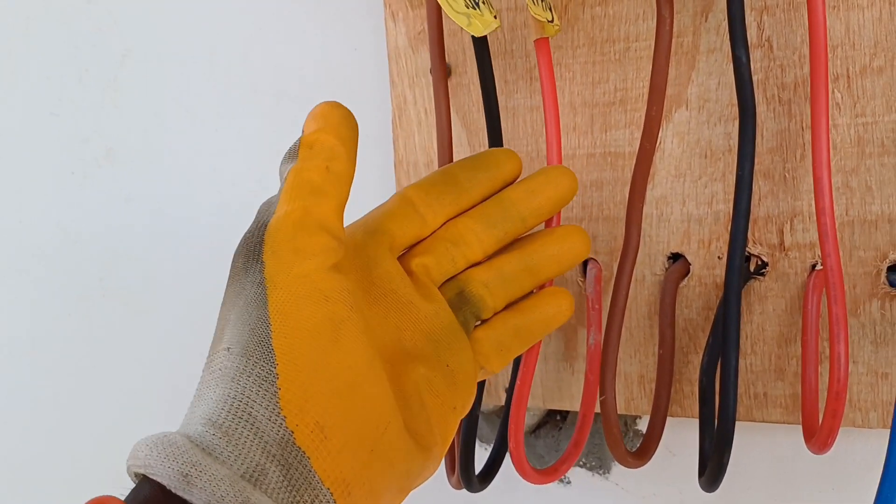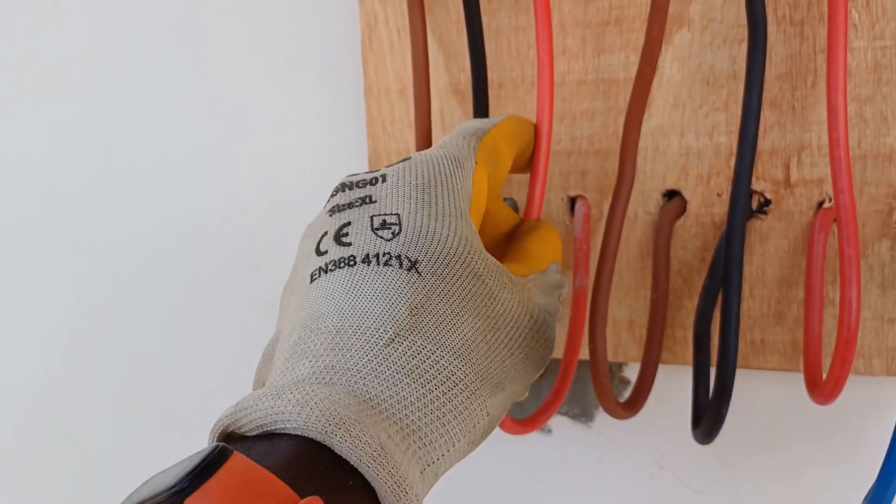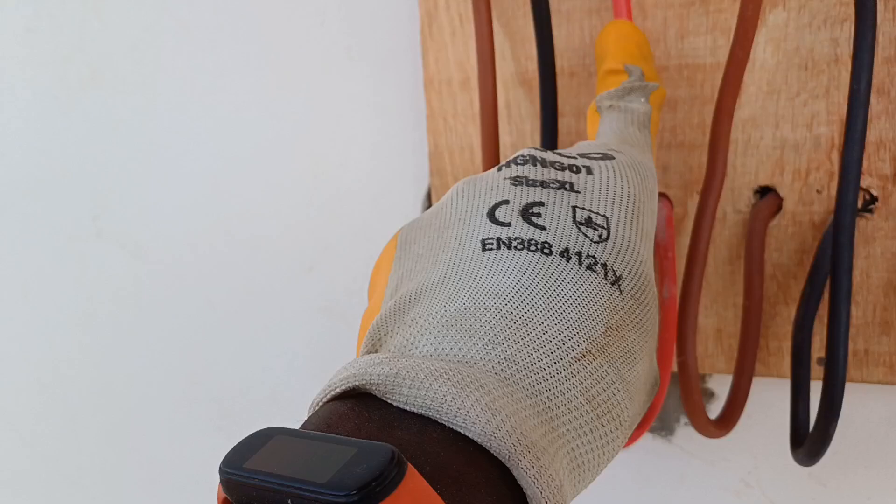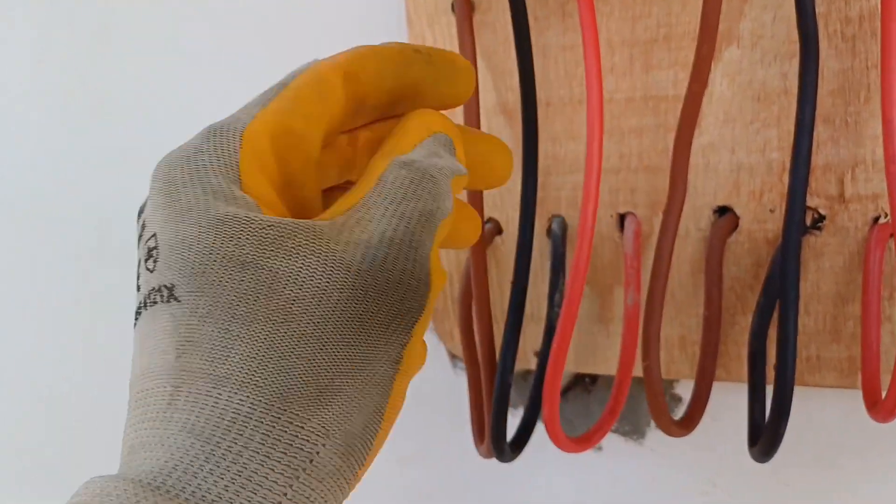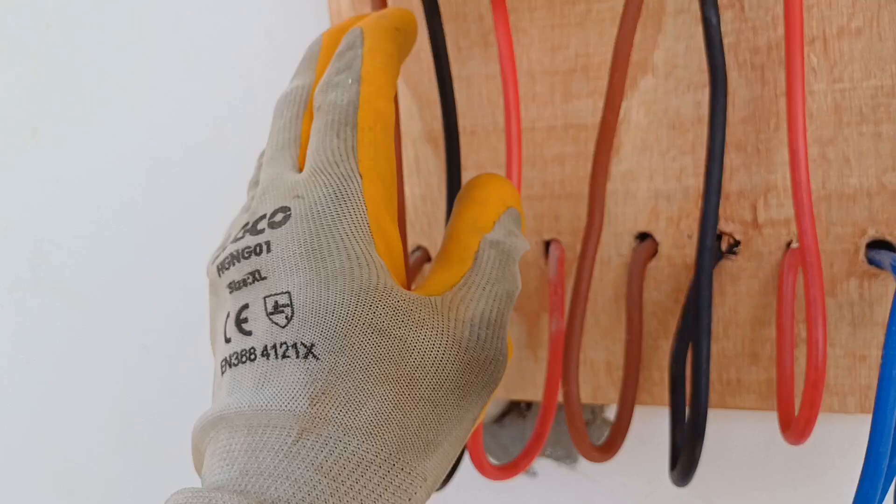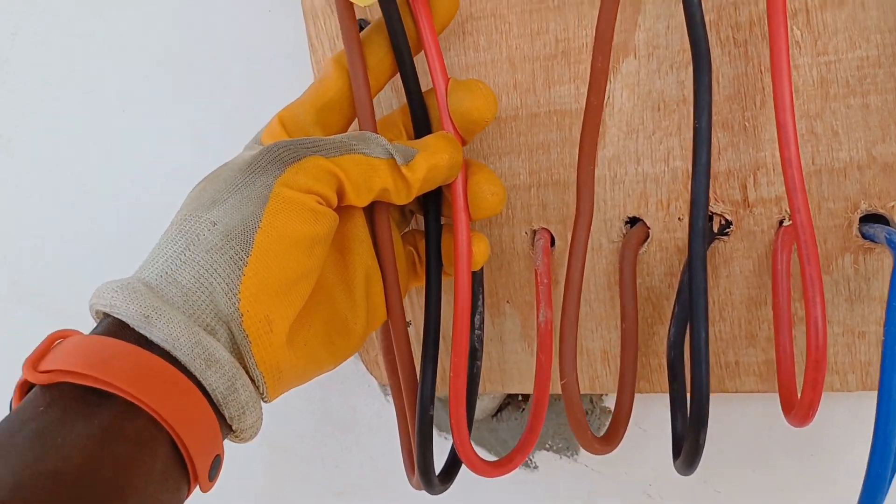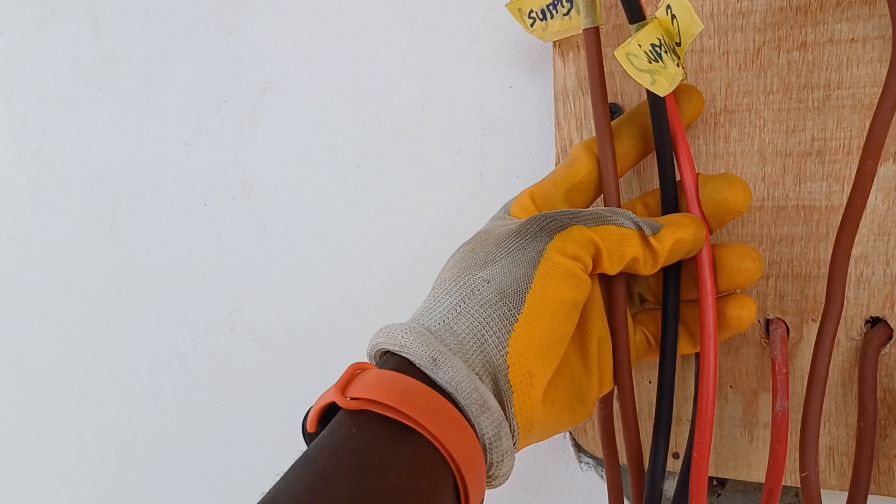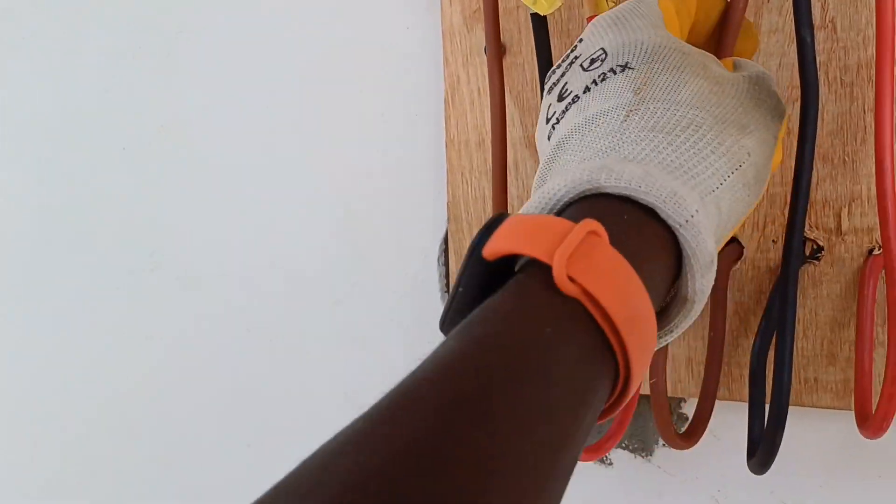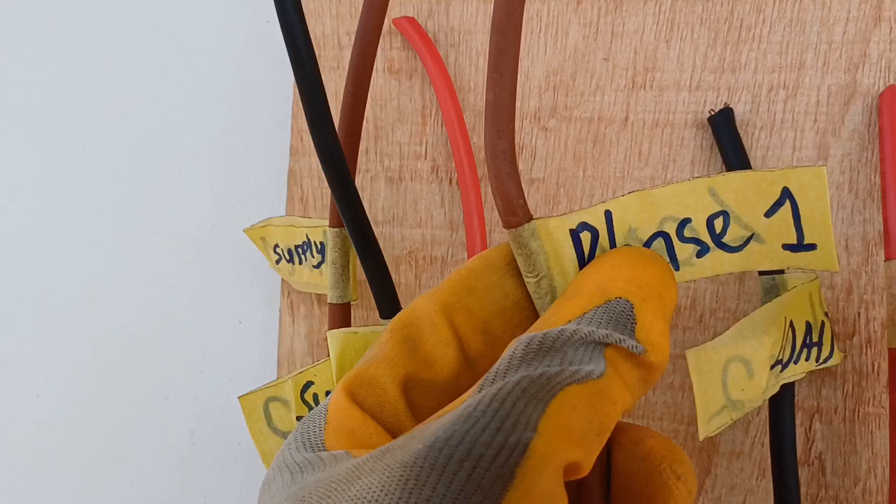Gray is supposed to be for phase three, but in this case we don't have gray color cable on the Ghanaian market. So I'm done with the supply, that's the cable coming from the ECG pole.